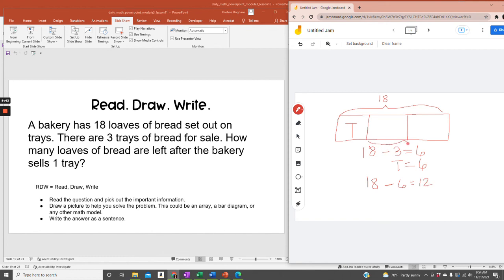So this number right here, I'm going to call L, the number that are left. Right after he sells one, there are two trays left. So L equals 12.